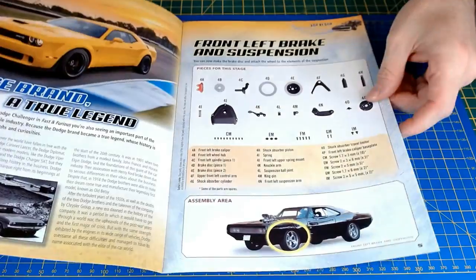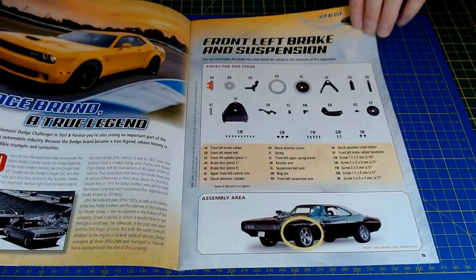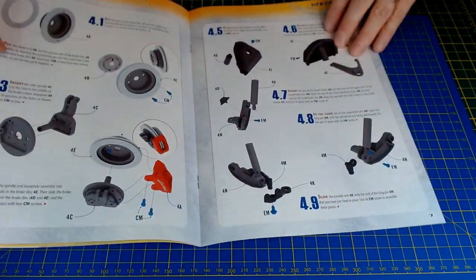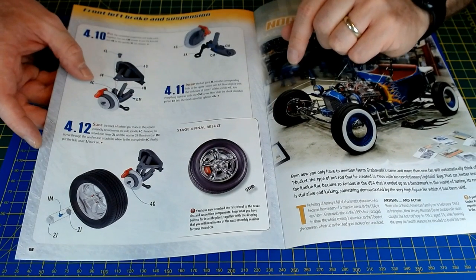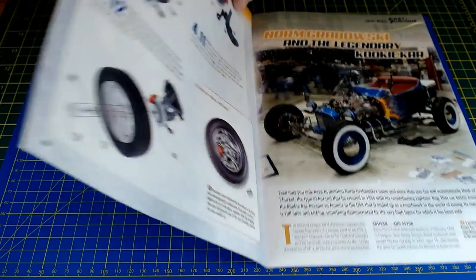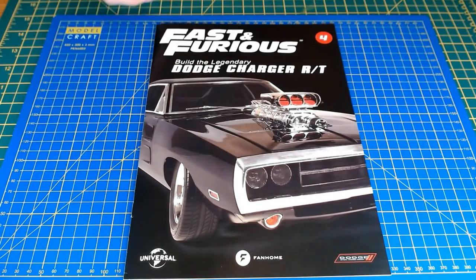In issue four, we'll have the front left brake and suspension, so we're actually going to get some working parts of the model done. The front left brake and suspension will be coming up soon.